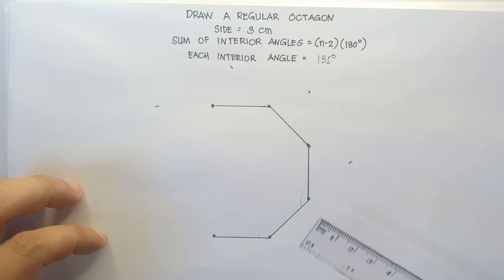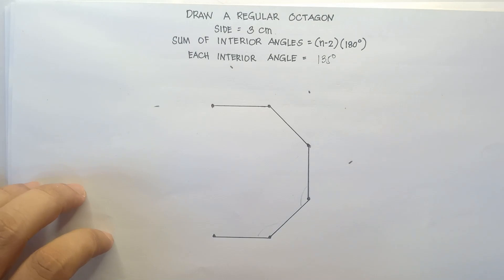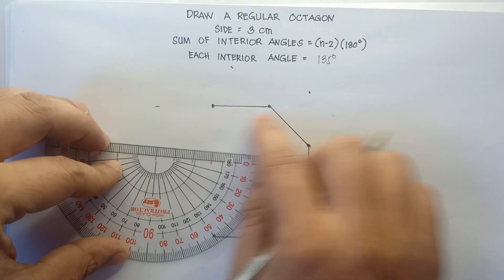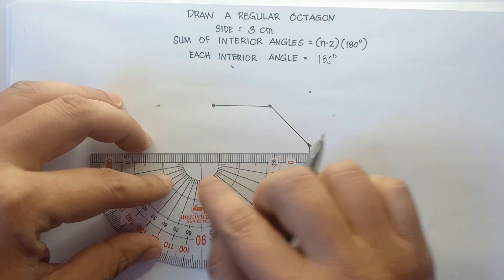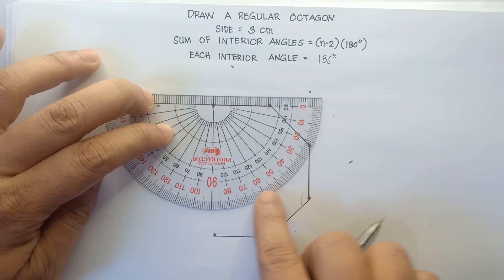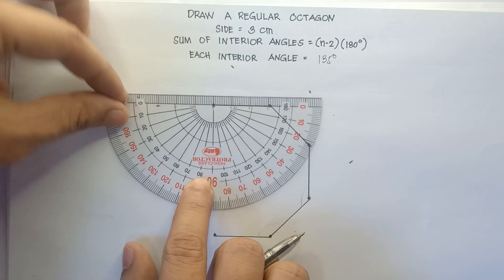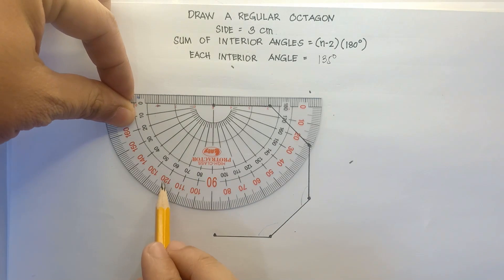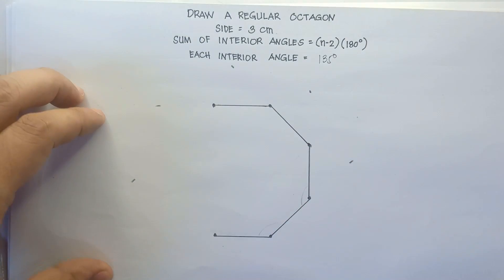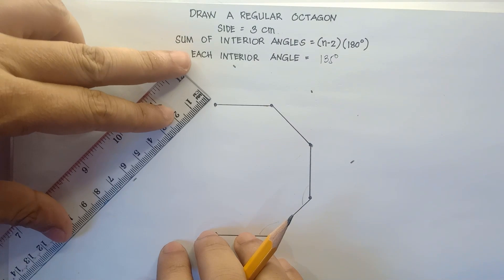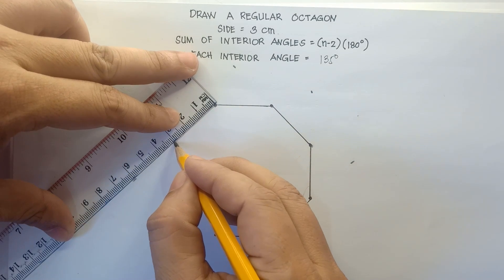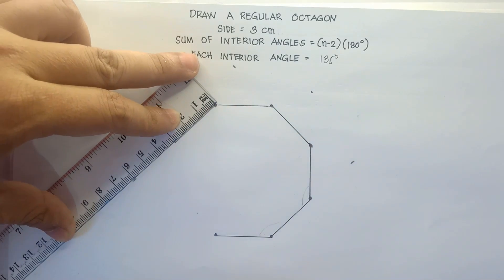So we're done with how many sides now? 1, 2, 3, 4, 5 — 6 sides done. For the 6th side, align 0 on this particular side and put the last point at the center of the protractor. We have 0, 10, 20, 30, 40... 90 degrees... then 135 — in the middle of 130 and 140. Use your ruler: 3 centimeters for the side.